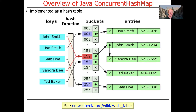A hash table takes keys — could be strings or large integers — and performs some computation on them called a hash function. That maps the key into a fixed-size table, which might have 256 or 1024 elements. If the same key hashes to the same location, that's resolved using a linked list or some other data structure for collision resolution, as this simple example shows.